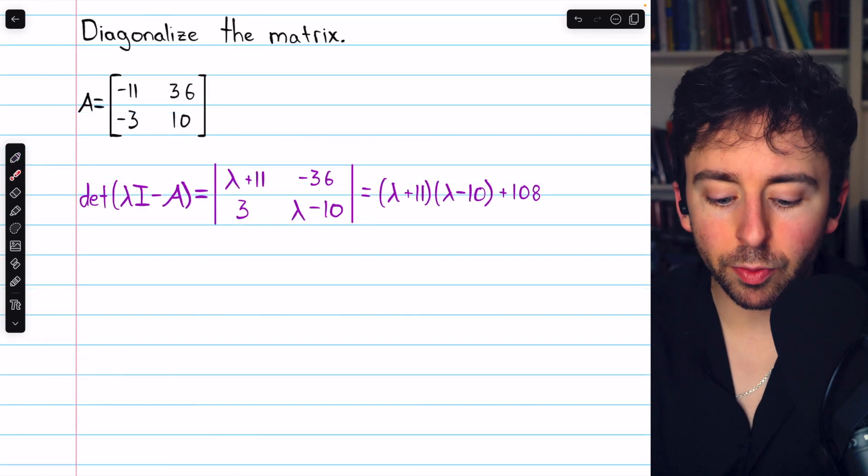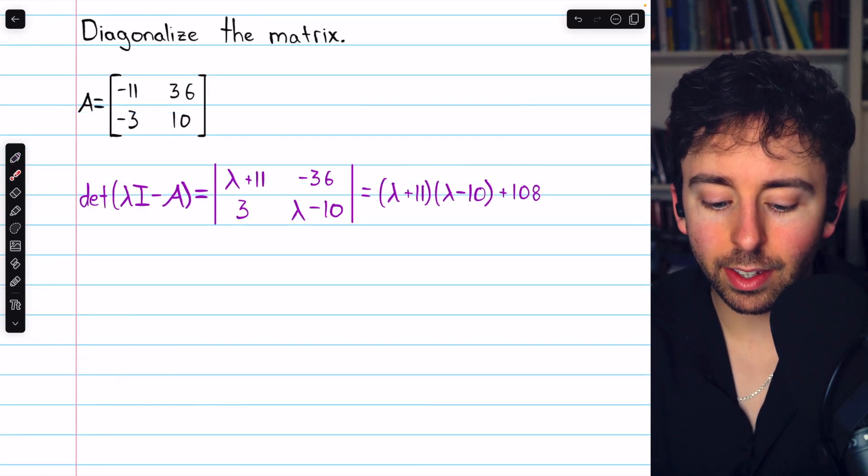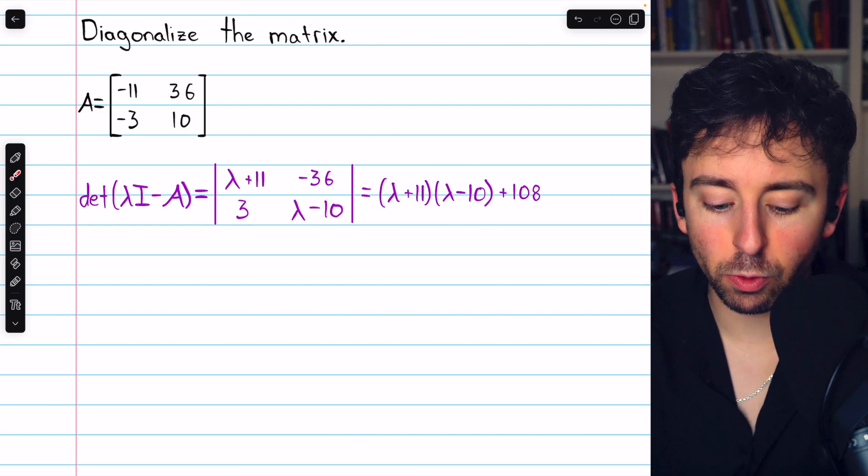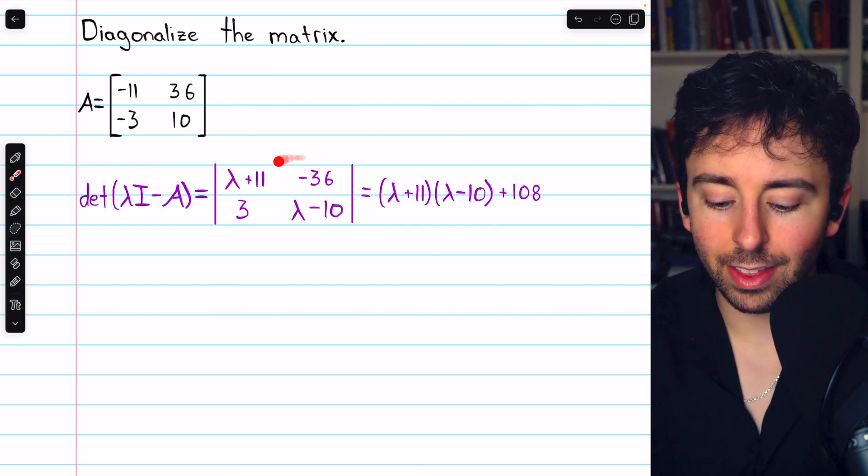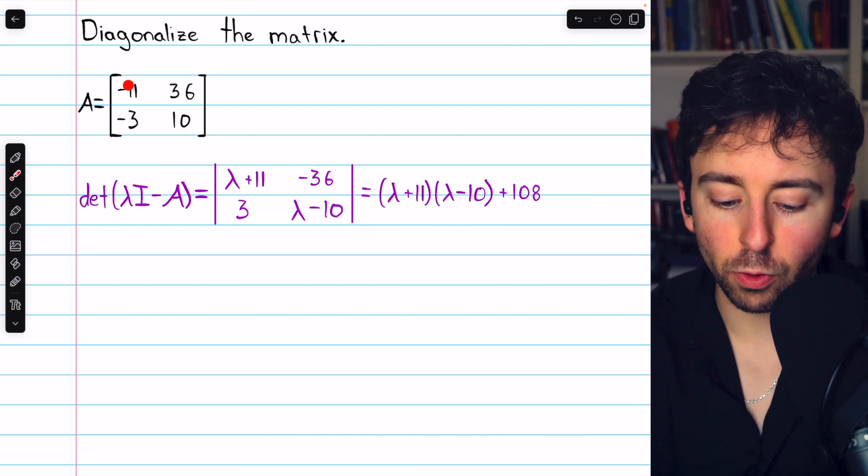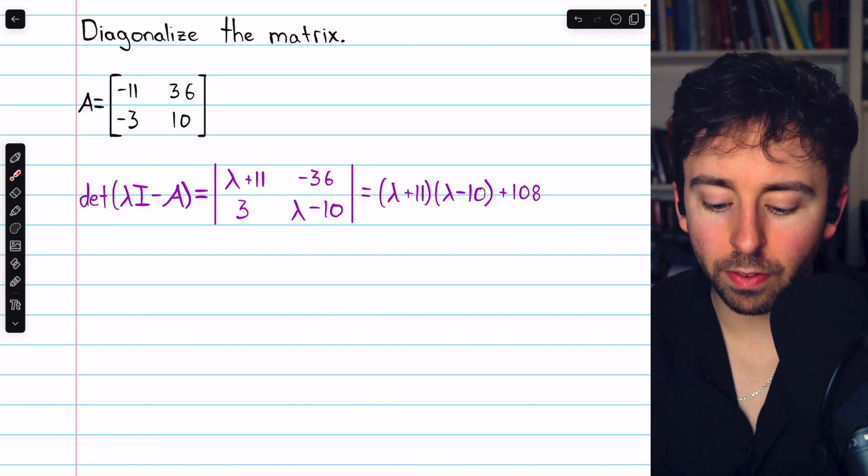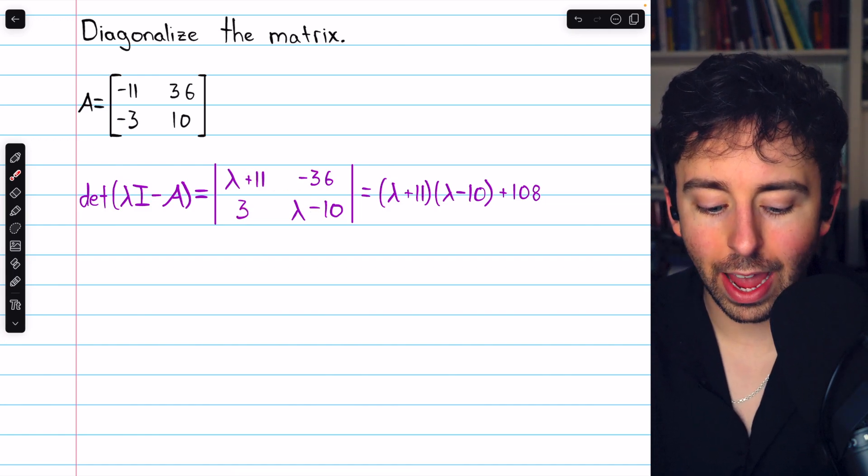Let's get into it. Beginning by finding the eigenvalues, we take the determinant of λI minus our matrix A, which looks like this. λ minus the entries of A on the diagonal, and then off the diagonal, we just have the negatives of the entries of A.